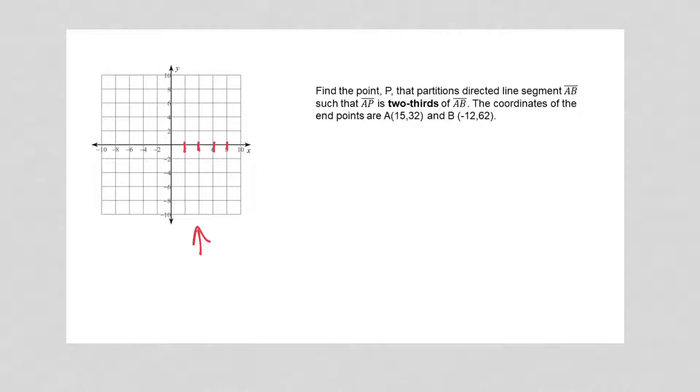The second thing I wanted to go over is over here on this one, a partitioning question, and it tells you the ratio is two-thirds. That's a fraction. That's two out of three. And when you have a fraction like that, that means three total parts.